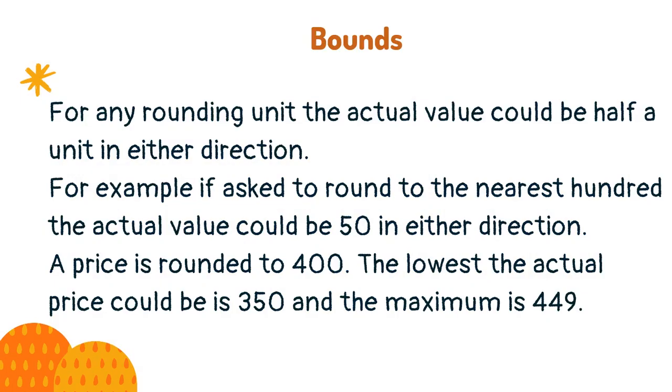For any rounding unit the actual value could be half a unit in either direction. For example, if asked to round to the nearest hundred, the actual value could be 50 in either direction. A price is rounded to 400. The lowest the actual price could be is 350 and the maximum is 449.